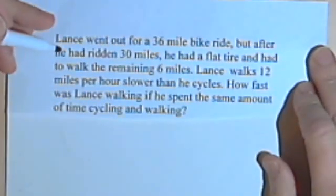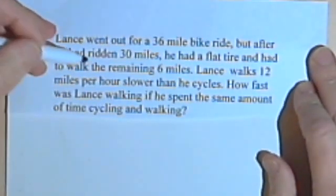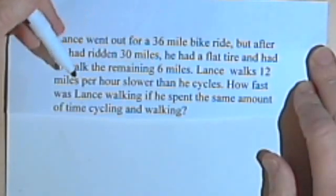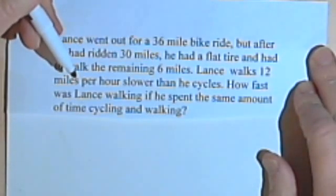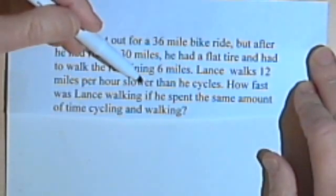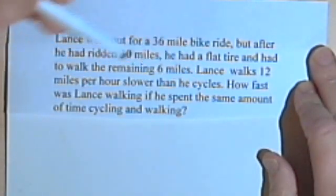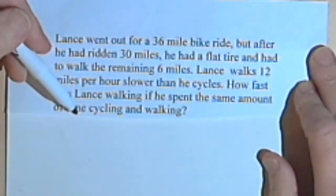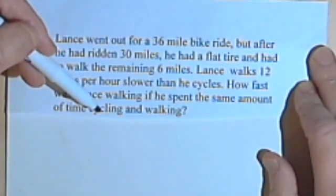Lance went out for a 36-mile bike ride, but after he had ridden 30 miles, he had a flat tire and had to walk the remaining 6 miles. Lance walks 12 miles per hour slower than he cycles. How fast was Lance walking if he spent the same amount of time cycling and walking?